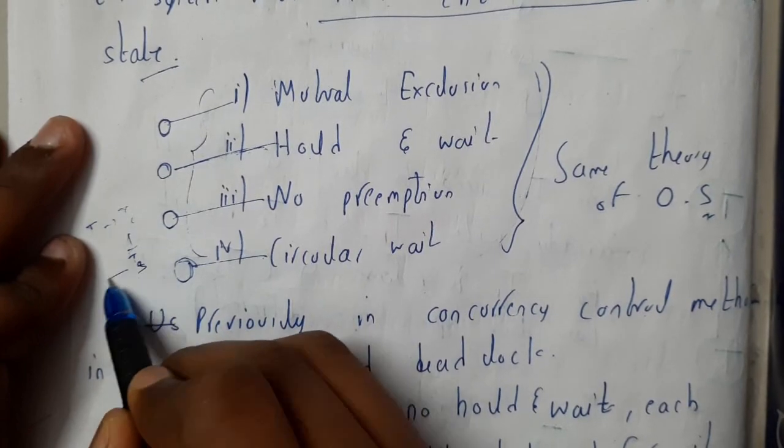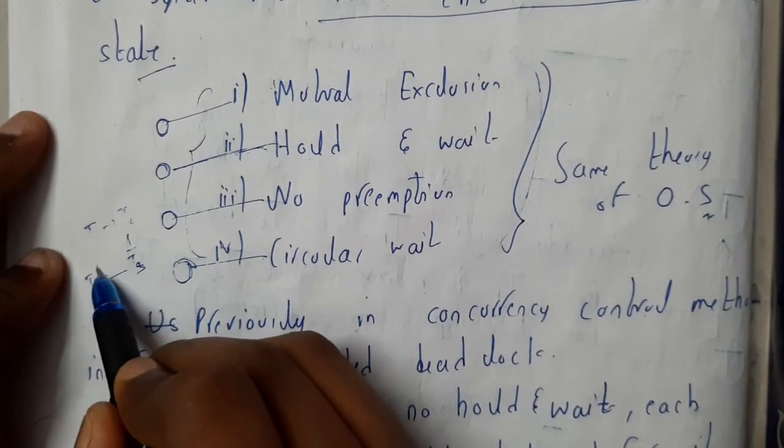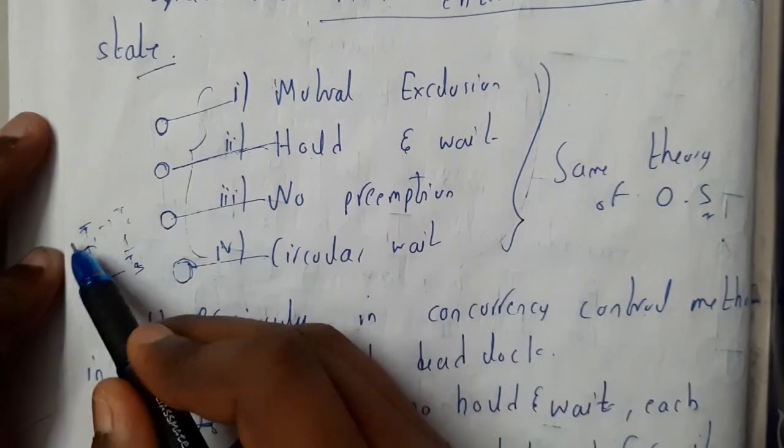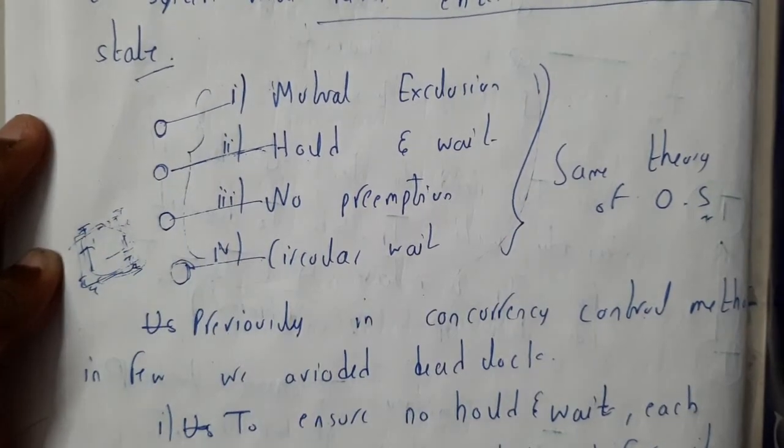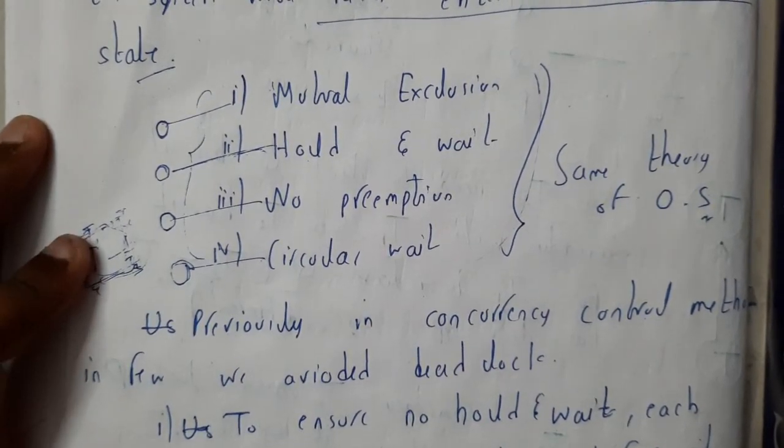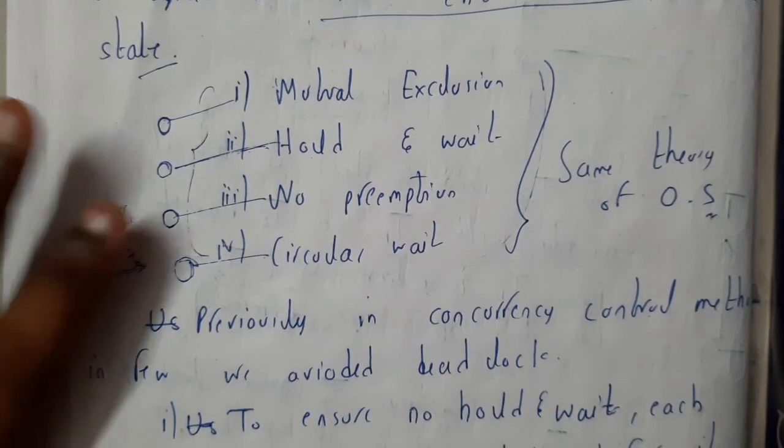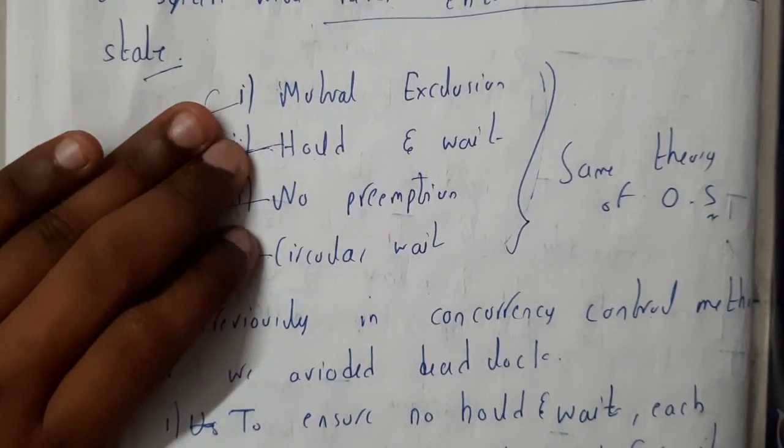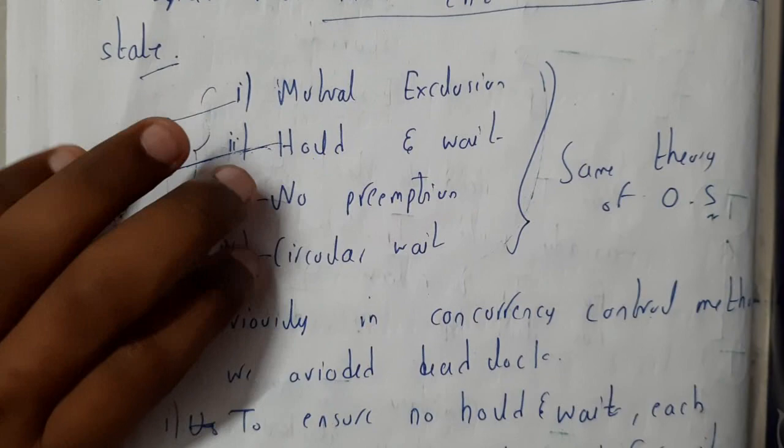T3 is requesting for the resource of T4, T4 is requesting for the resource of T1. Here we formed a cycle where the process continues and we never get the solution. Any one of these should be broken.